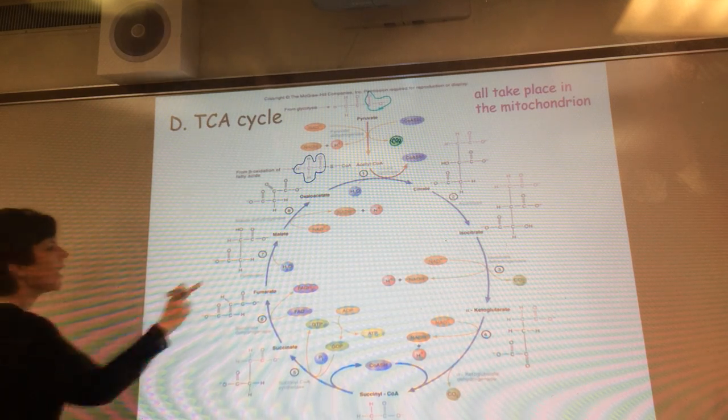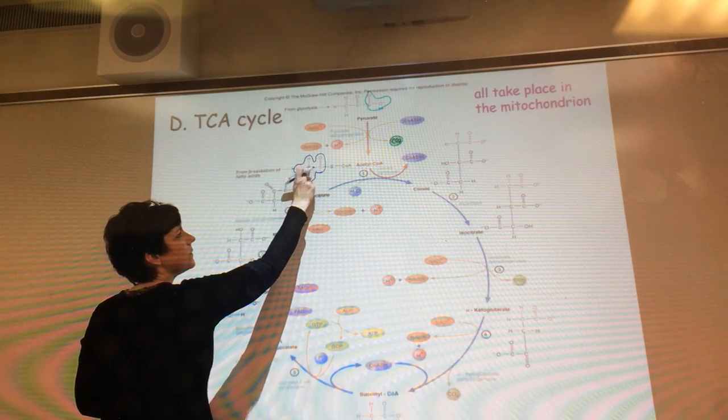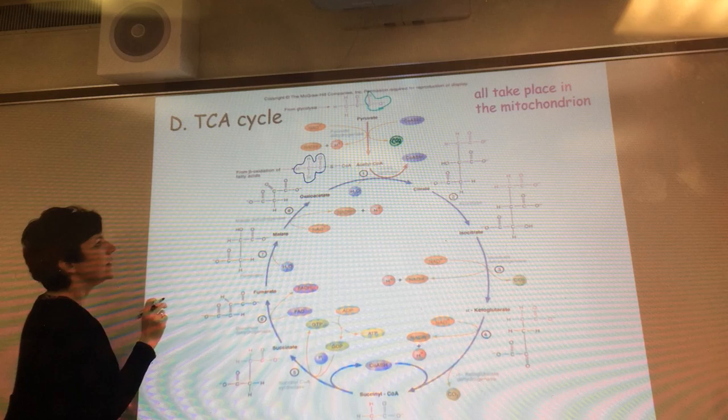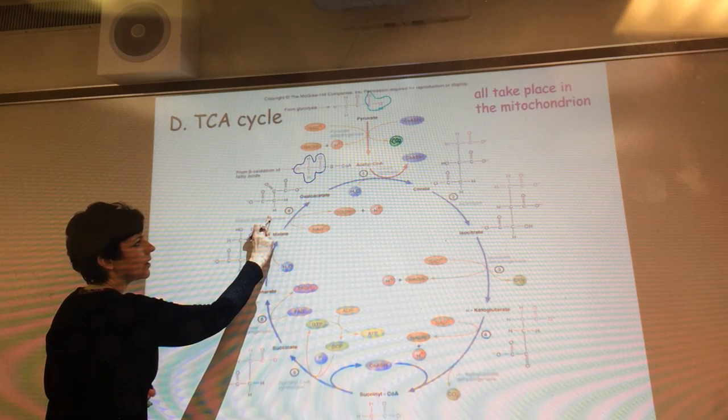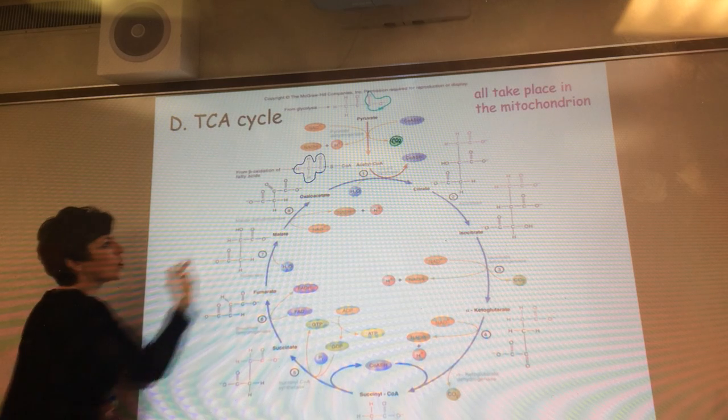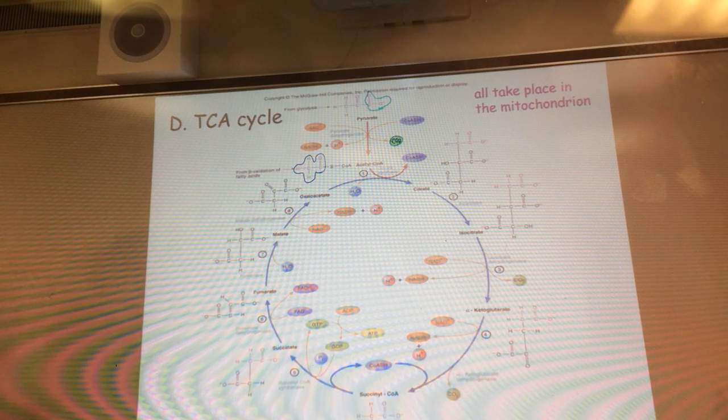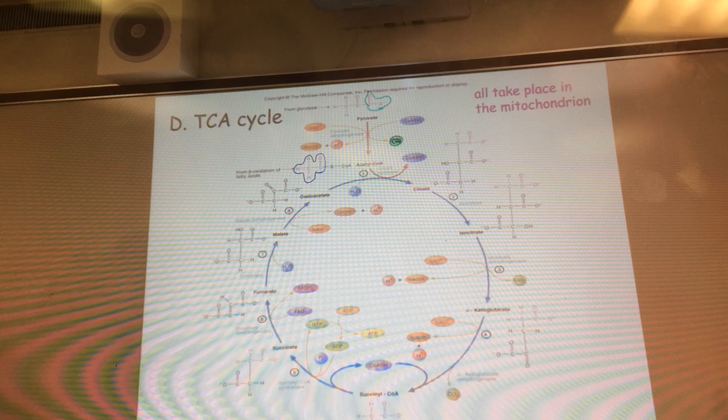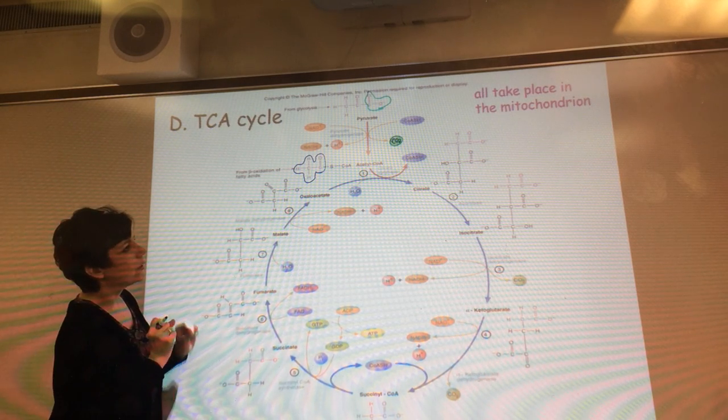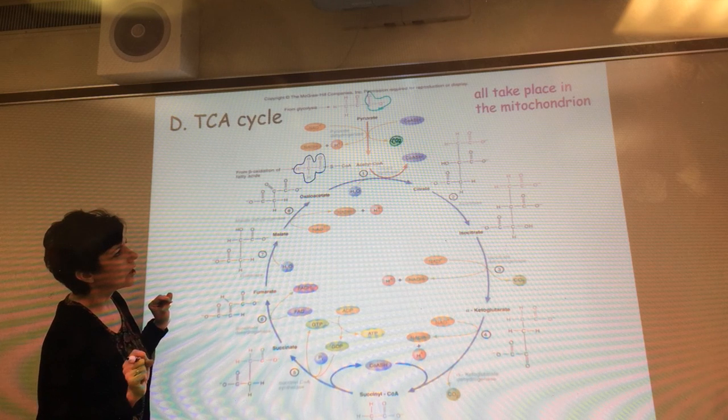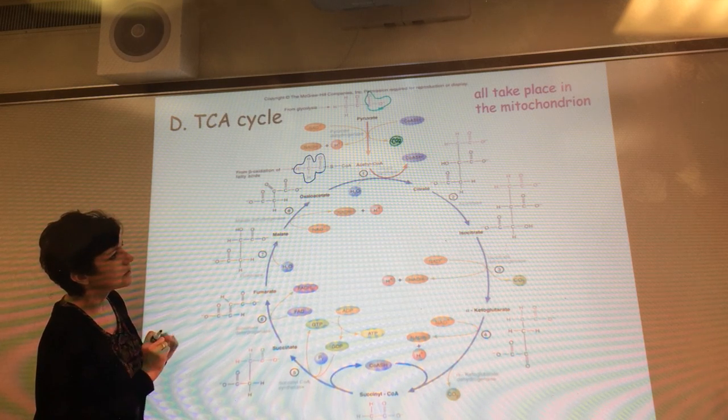I've got this two-carbon unit, and on this screen it's kind of like a pink color, and it's going to join with this four-carbon oxaloacetate molecule. So where is the new bond when we join our four and our two to become the six-carbon citrate?